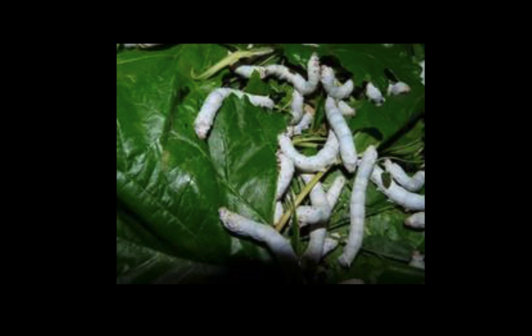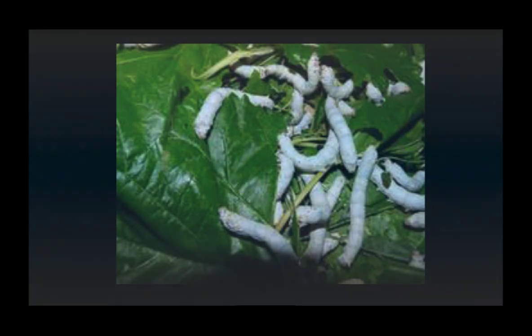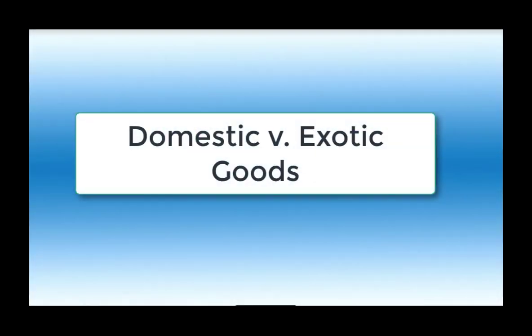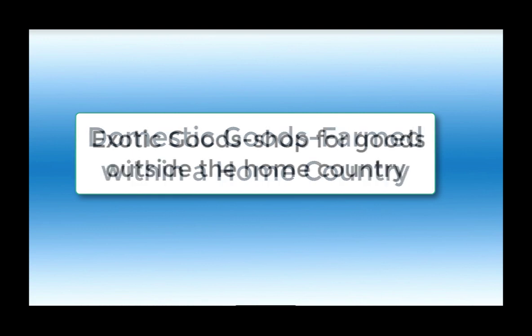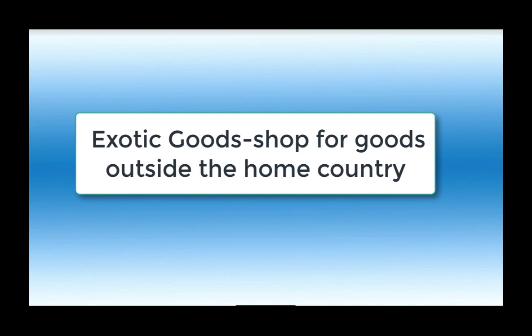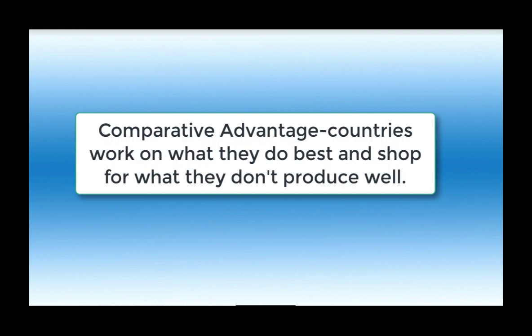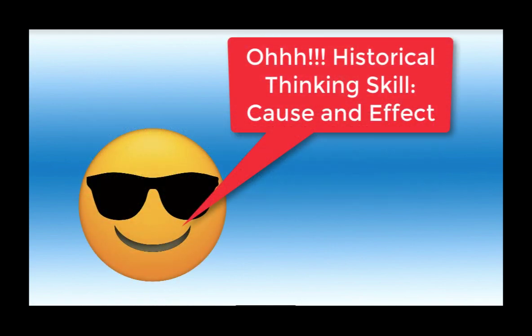Here's a key economic distinction: domestic goods are what a group farms or produces within their own country, while exotic goods are products farmed and produced outside in other countries. Countries trade because they're good at making domestic goods but want exotic goods from elsewhere. This desire for exotic goods forces people out of their homelands into other regions — creating a cause-and-effect relationship, which is a historical thinking skill.